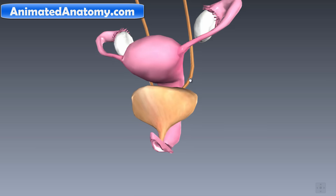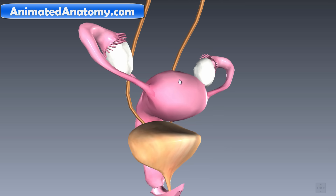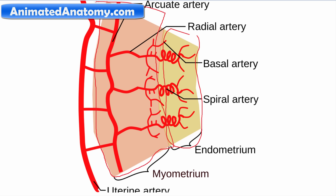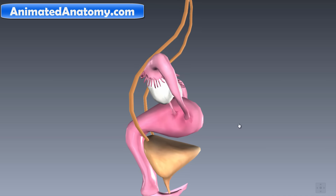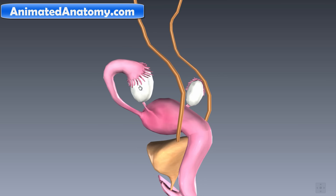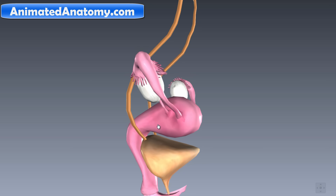Now I'll explain the uterus in more detail, along with the fallopian tubes and ovaries. Here we see the layers and arteries of the wall of the womb. The inner layer is called the endometrium, the middle layer is the myometrium, and around the womb there is loose connective tissue called the perimetrium. This is incredibly important for the implantation of the egg cell, which comes from the ovaries, travels through the fallopian tubes, gets fertilized, reaches the uterus, and implants. The implantation process and hormonal regulation of wall growth is a very important topic.